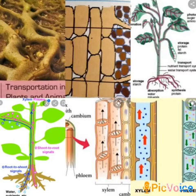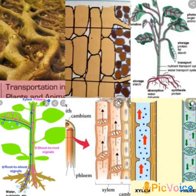Now, how do these substances get transported in plants? The first one is water and minerals. Water and minerals are absorbed from the soil through the roots. Roots have root hairs, and the function of root hairs is to increase the surface area for absorption of water and minerals. The water and minerals absorbed through roots are then transported with the help of a network of tubes known as xylem.